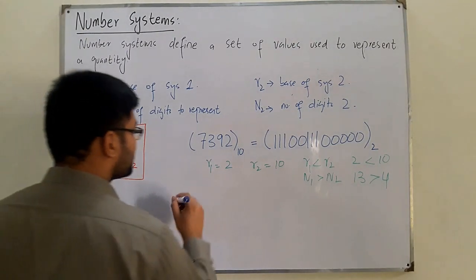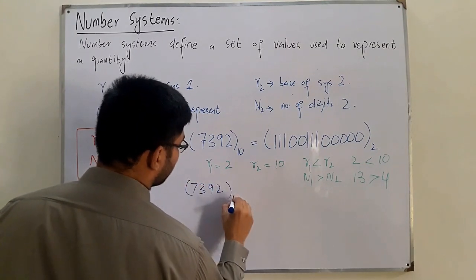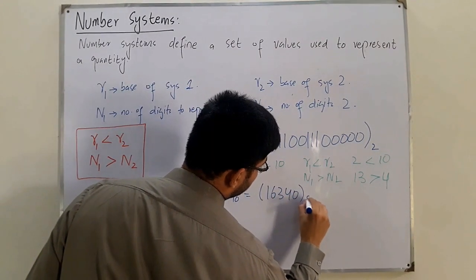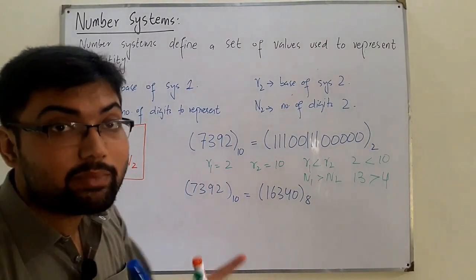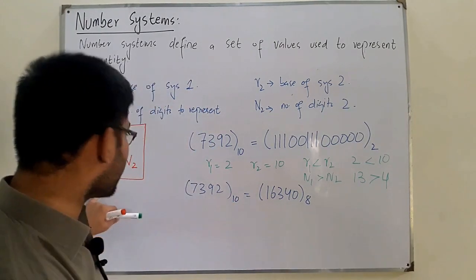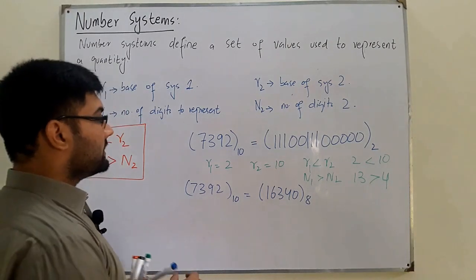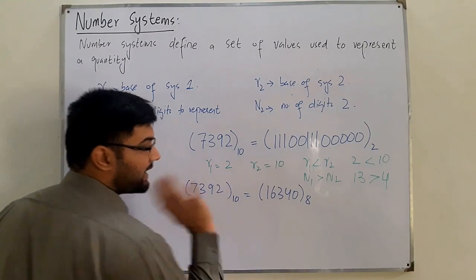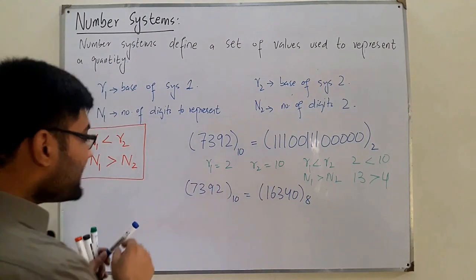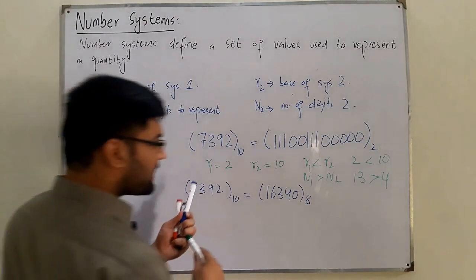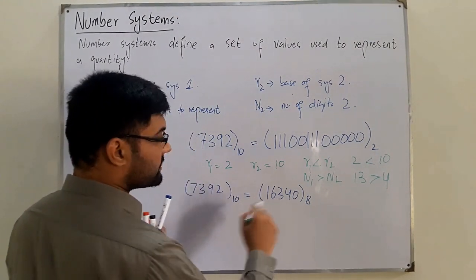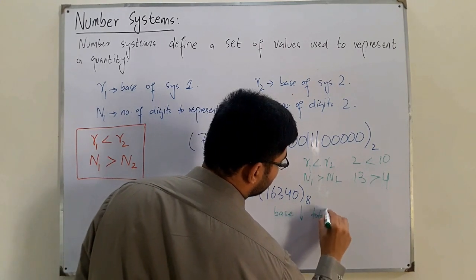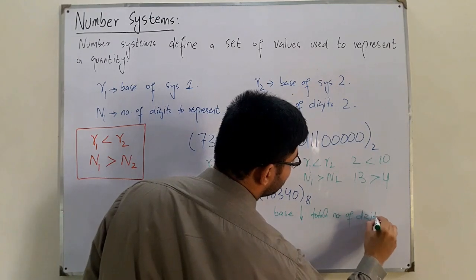Similarly, if we convert 7392 to octal, we get 16340 — that is 5 digits. The base of octal (8) is less than decimal (10), so the number of digits required (5) is greater than in decimal (4). The base is less, so the total number of digits required to represent the same number is higher.